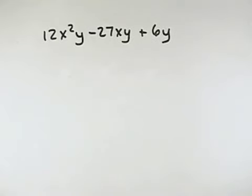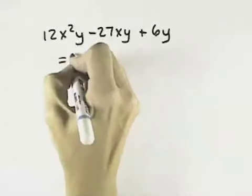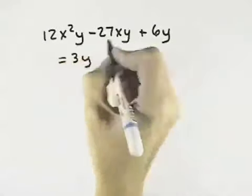We want to factor this problem completely, which means first to factor out the greatest common factor. The coefficient in common is a 3, and the variable in common is a y.